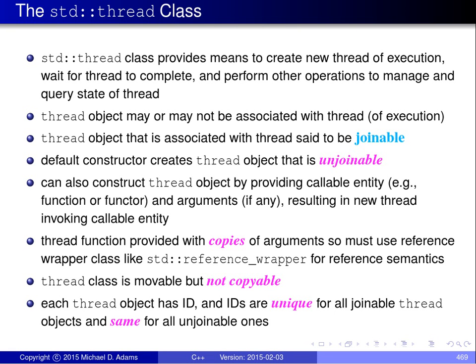This results in a new thread being created that invokes the thread function with the specified arguments. If a thread function takes any arguments, the arguments are copied by the Thread constructor, and copies of the arguments are used when the thread function is invoked. If reference semantics are desired — if you want parameters to reference the arguments provided to the Thread constructor — you need to use a wrapper class like ReferenceWrapper in the standard library.